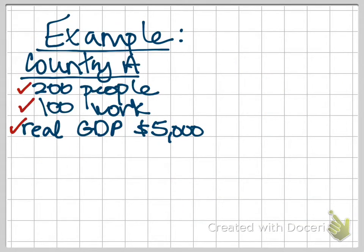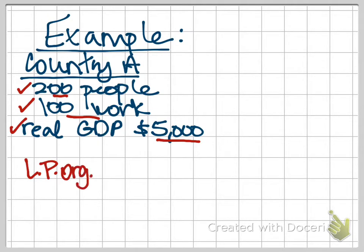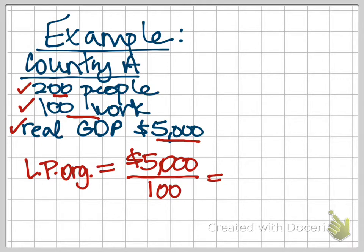So we're going to have Country A. Country A has 200 people and half of those work, so we have 100 workers. They're producing output valued at $5,000, so that's their real GDP. We are going to calculate the original labor productivity for Country A: we take the real GDP of $5,000 and divide by our number of workers, 100. We find that our current labor productivity is $50 per worker.